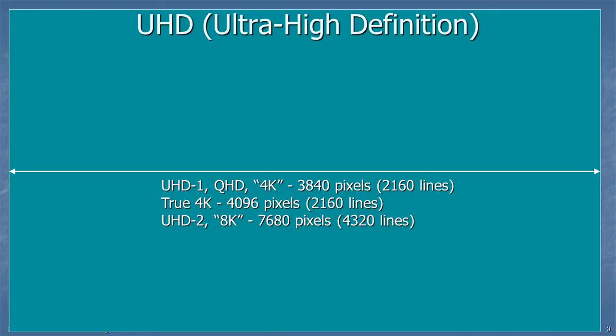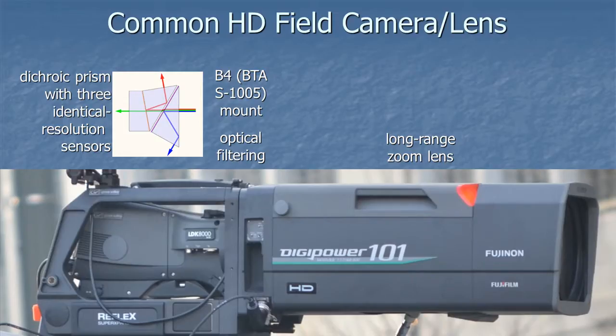I'm not going to talk very much about 8K in this. Here's a common HD field camera and lens combination. Besides what you can see, there's stuff going on inside. The important thing is that there's a prism splitting the light into its component parts — red, green, and blue — each with its own sensor. The lens mount is extremely well-defined, there's optical filtering, and even the depth of the three sensors is very well-defined by that standard.